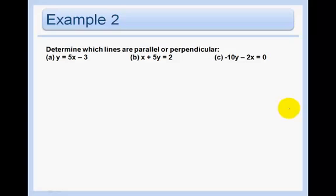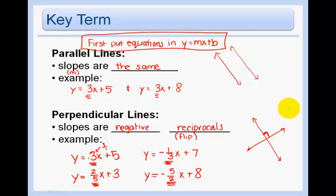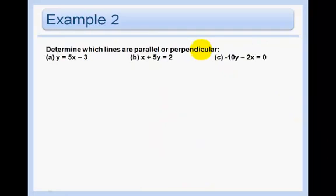And so that is the equation of the line passing through this point that is parallel to that line. Our next example asks us to determine which lines are parallel or perpendicular. And so what did I say our first step was? First, put equations in y equals mx plus b. Well, we better do that. So a, lucky us, it's already in y equals mx plus b. The second one,